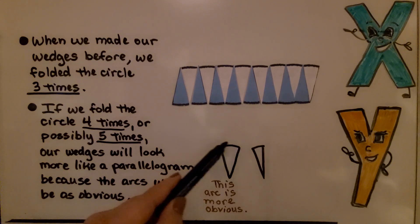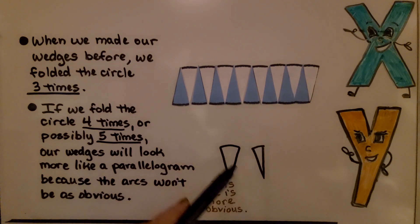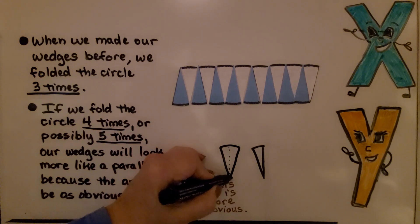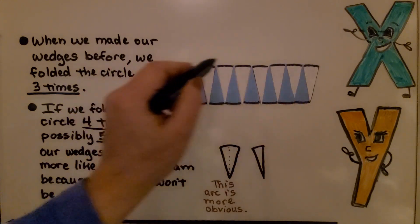But if we cut this in half by folding it again, the arc is smaller and it looks a little more straight, doesn't it? It's not as obvious.